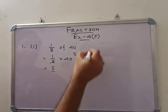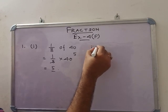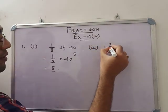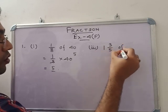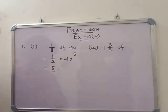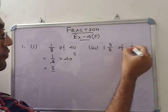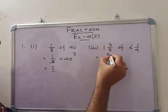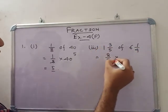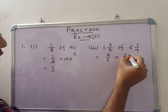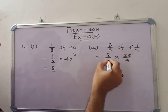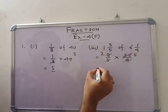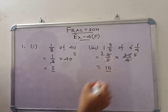Next, number 3: 1 of 3 by 5 of 6 of 1 by 4. That means 8 by 5 into 25 by 4. This is 5 and this is 2, so this is 10.